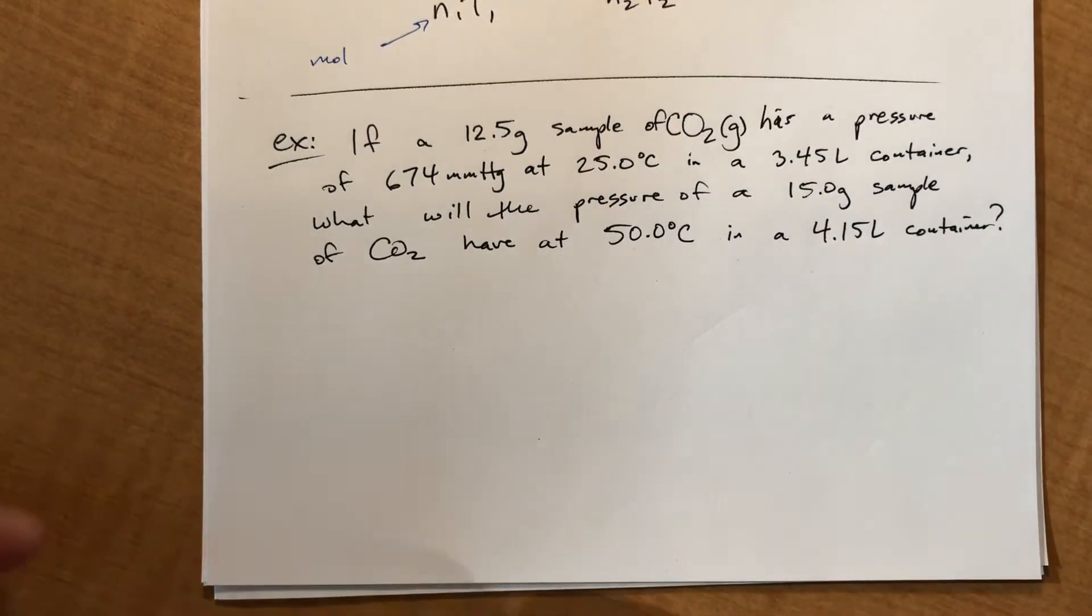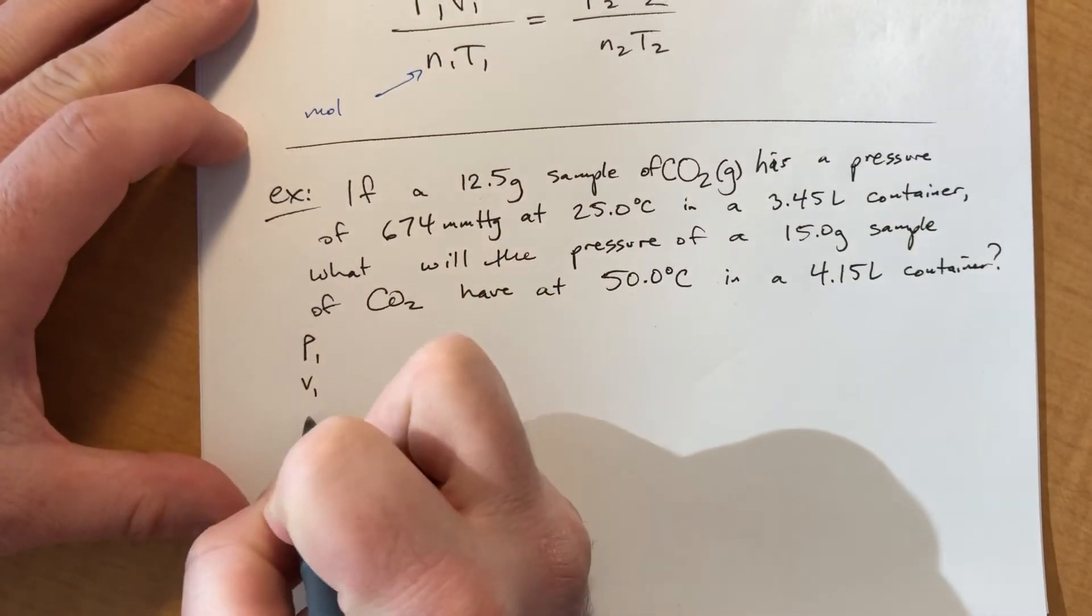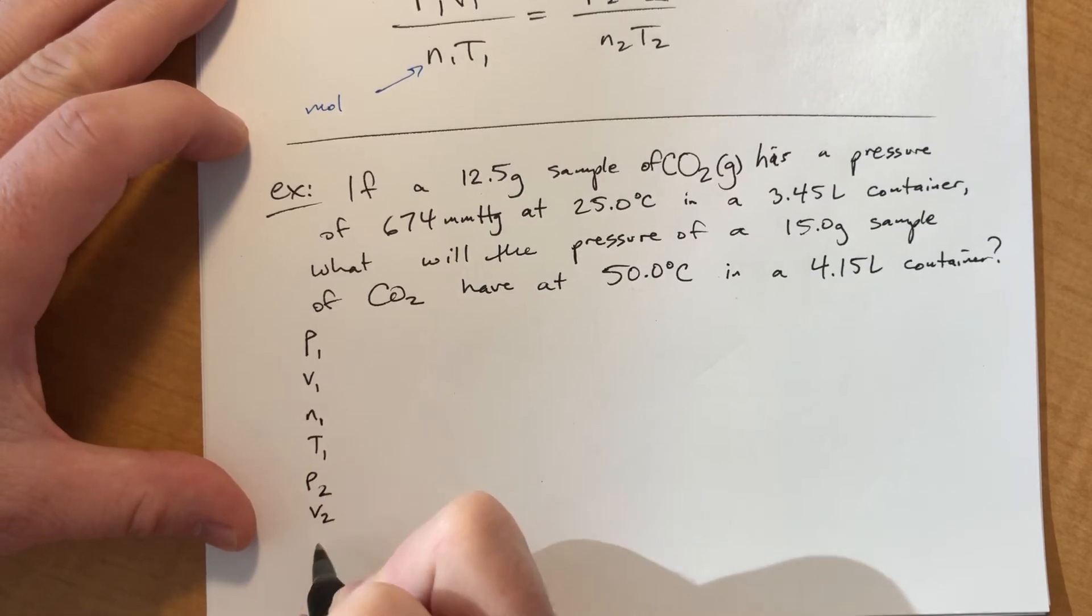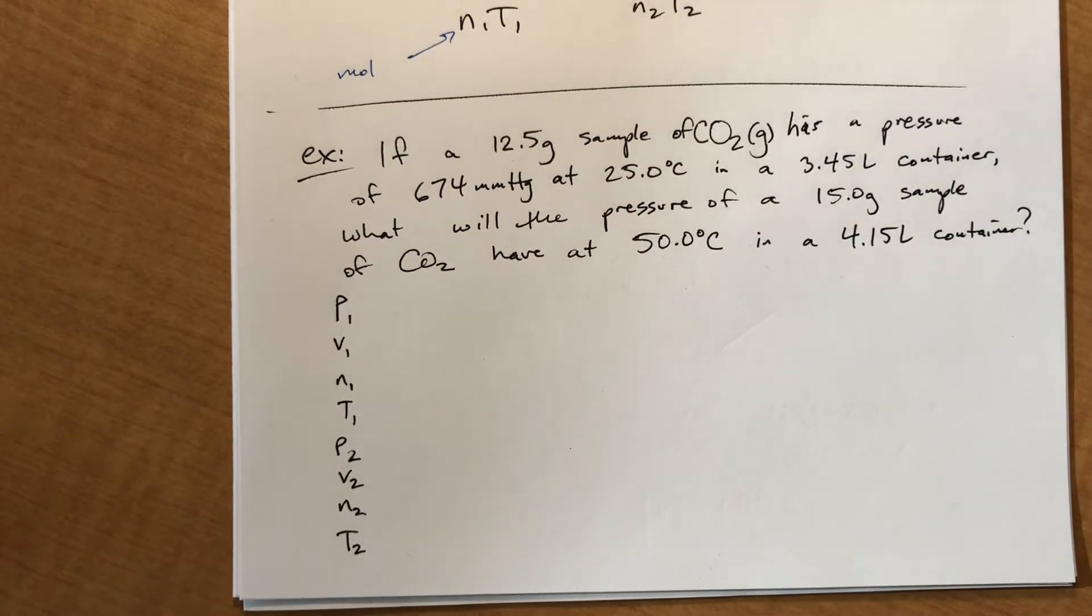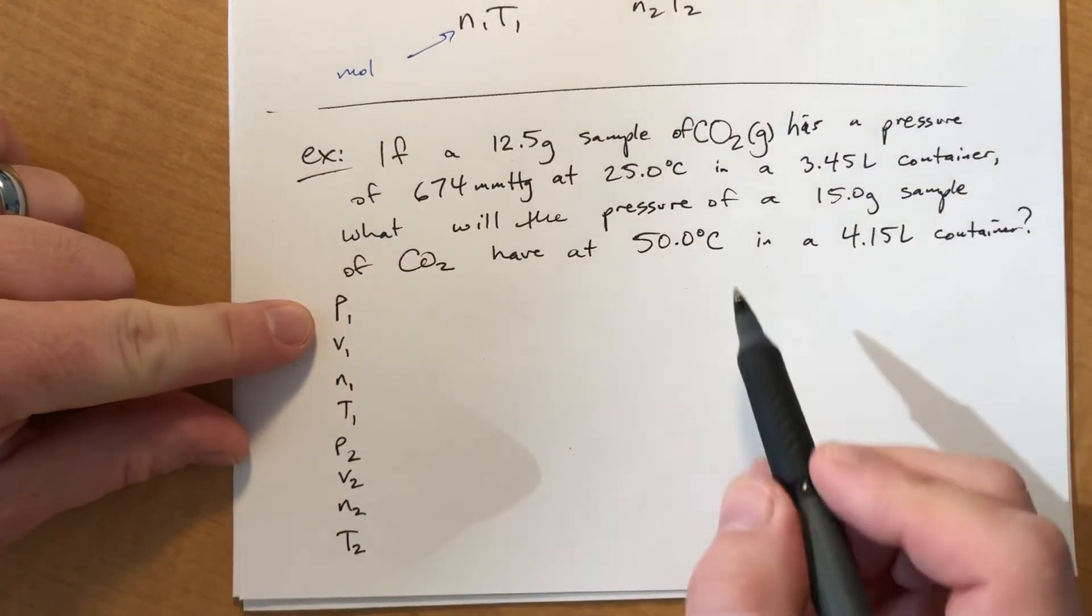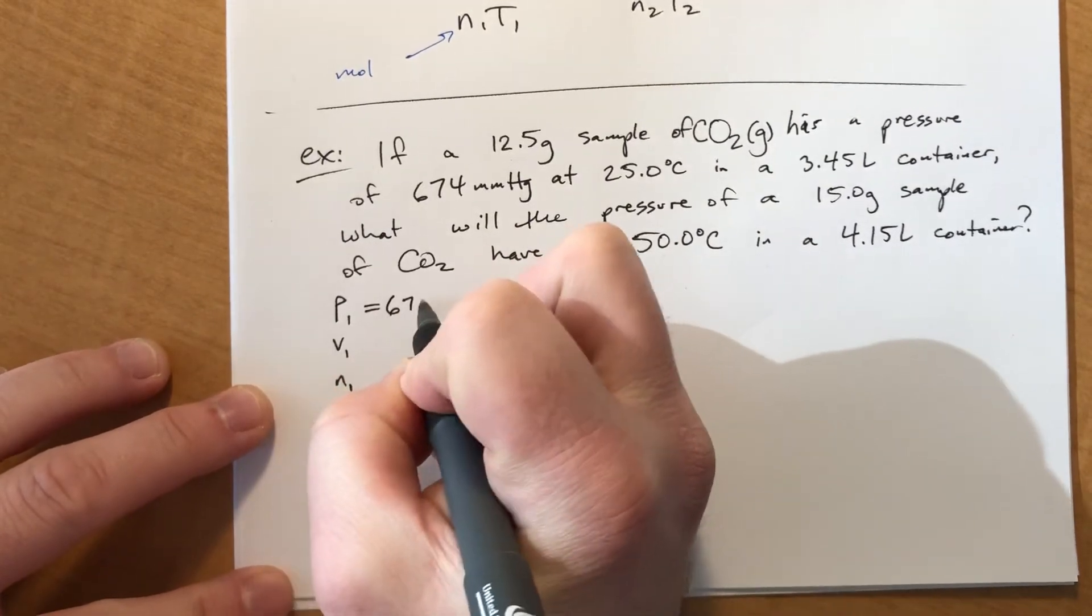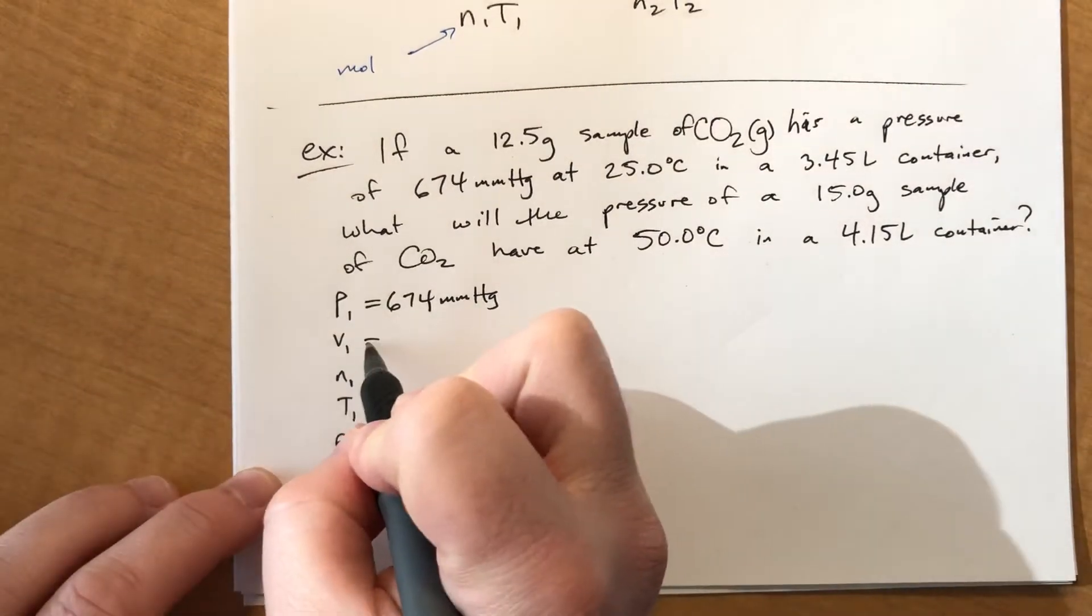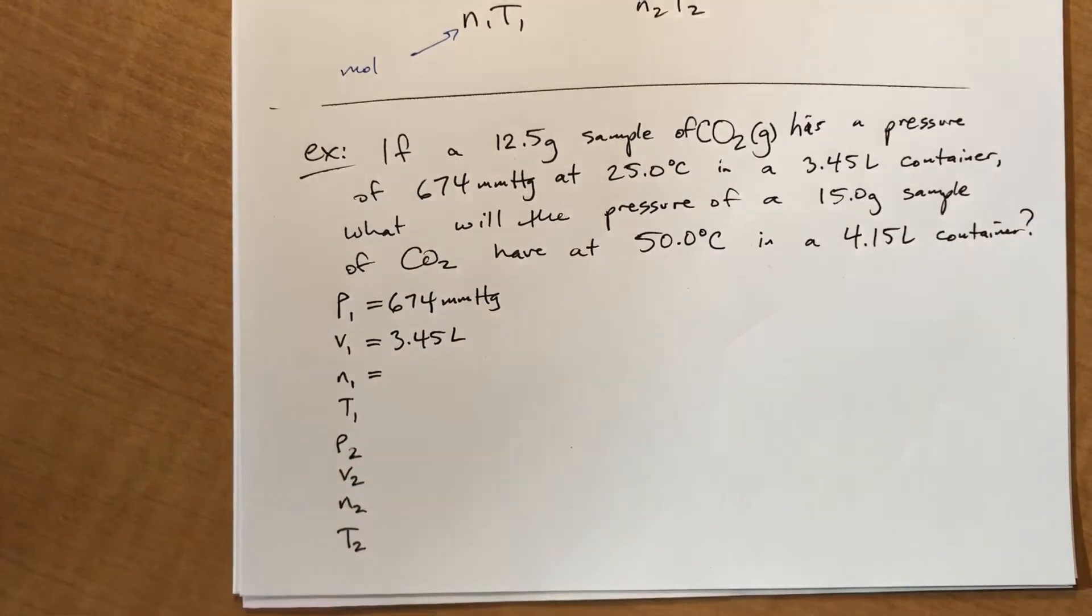What I'm going to recommend for anybody doing word problems who struggle with word problems, which these all tend to be word problems because we're using this equation, is I'm going to do a little inventory of what we know and what we don't know. And I'm going to also make sure the units all cancel out. P1, V1, N1, T1, P2, V2, N2, and T2. So at first glance, we may not even have all of these things, but that's okay. We can figure it out. So the pressure one is, we're going to say everything before the parentheses is the initial set of conditions and everything afterwards is the final. So P1 is 674 millimeters of mercury. It doesn't specify what the units need to be, so that's totally fine. V1 is a 3.45 liter container.